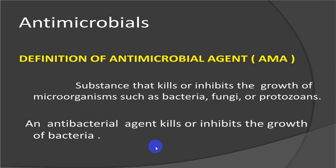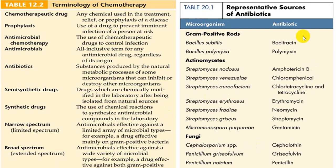Antibiotics are derived from various microorganisms. From gram-positive rods and actinomycetes fungi, you can get cephalosporin groups, griseofulvin, and penicillin. From gram-positive rods, you get bacitracin and polymyxin. Natural substances from microorganisms in the atmosphere are used to derive these compounds. The list includes bacitracin, polymyxin, amphotericin, chloramphenicol, erythromycin, neomycin, streptomycin, gentamicin, cephalosporin, griseofulvin, and penicillin. The first antibiotic derived was penicillin.